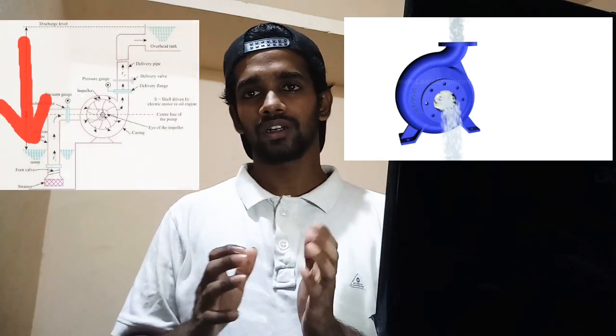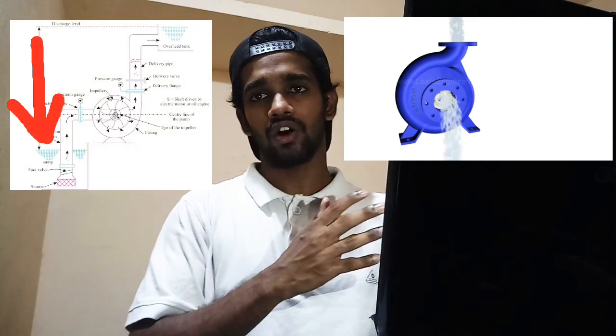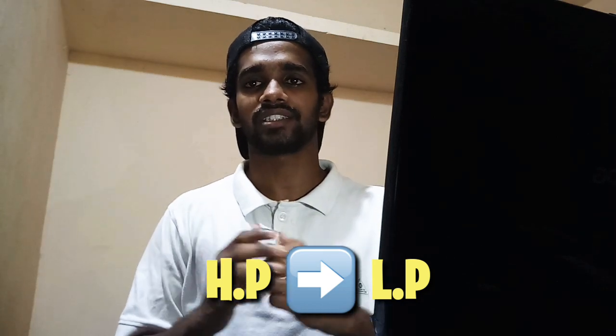As the water starts to rotate, centrifugal force pushes the water towards the periphery of the volute casing, creating a partial vacuum at the eye of the impeller. The one bar atmospheric pressure then pushes water towards the eye of the impeller, since fluid always travels from a region of high pressure to a region of low pressure.